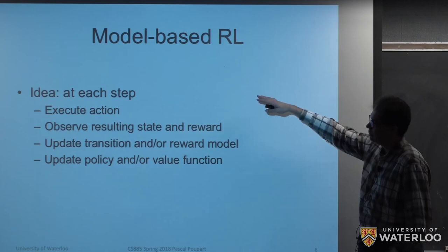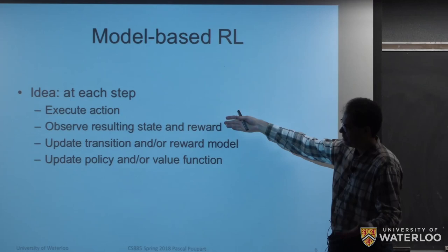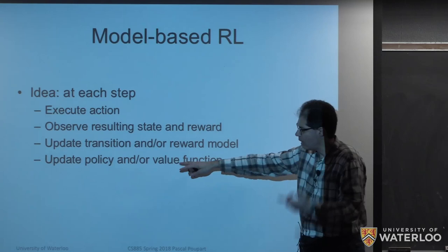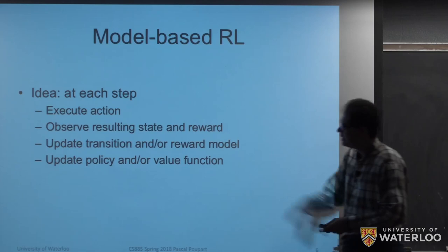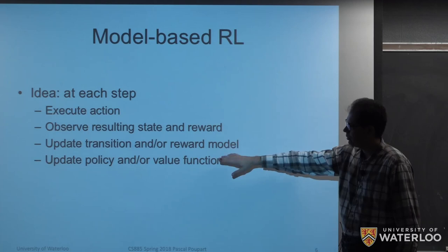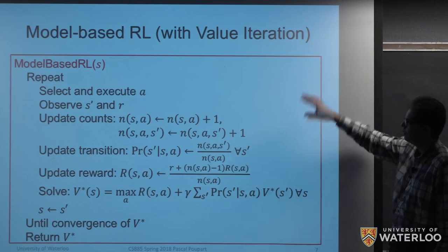With model-based reinforcement learning, we can summarize the approach as follows: at every step, we execute an action, observe the resulting state and reward, update our transition or reward model, and then based on that model, update the policy or value function. The key step added is updating the transition and reward model, so policy optimization is based on the model rather than directly on samples.